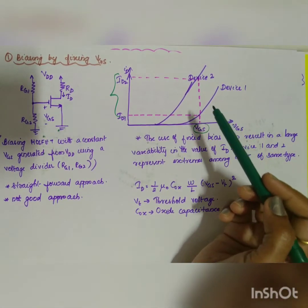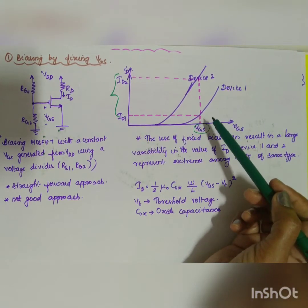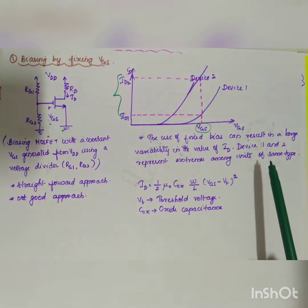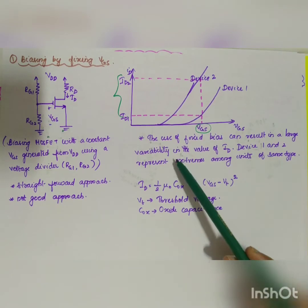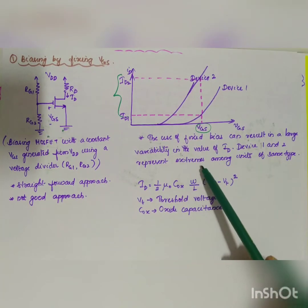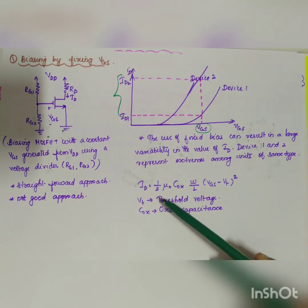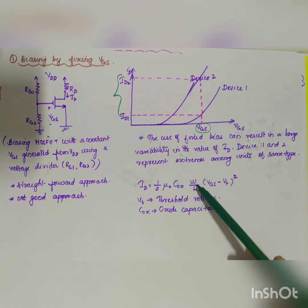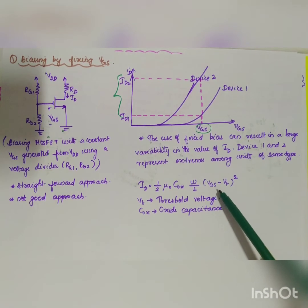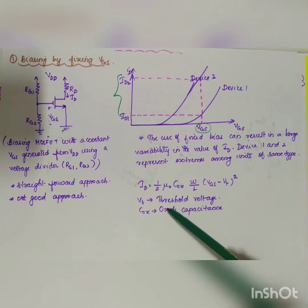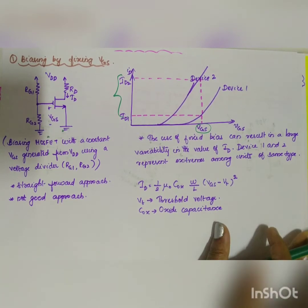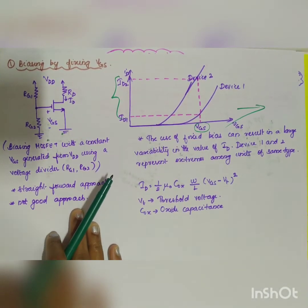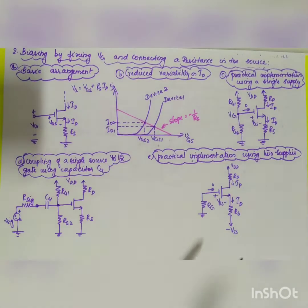The variation of ID current should be very small; it should not be large. The use of fixed bias can result in large variability in the value of ID — device 1 and device 2 represent the extremes among units of the same type. The drain current ID is given by: ID = (1/2) × μn × COX × (W/L) × (VGS − VT)², where VT is the threshold voltage and COX is the oxide capacitance.